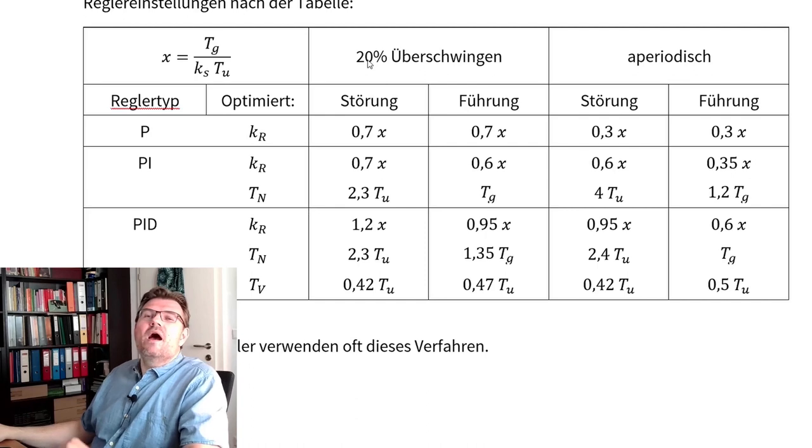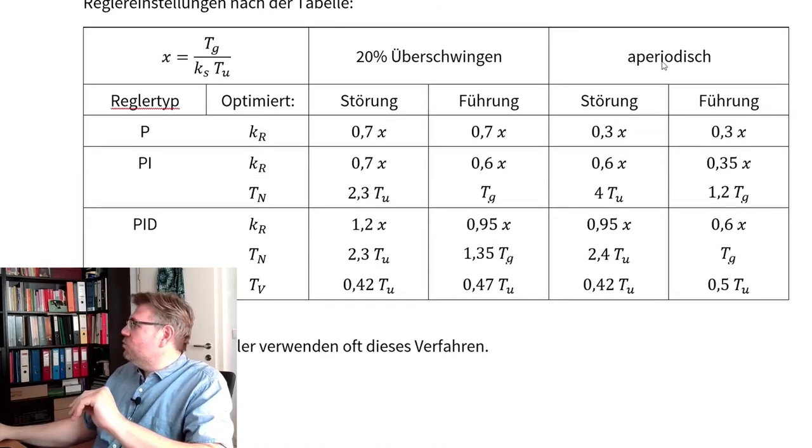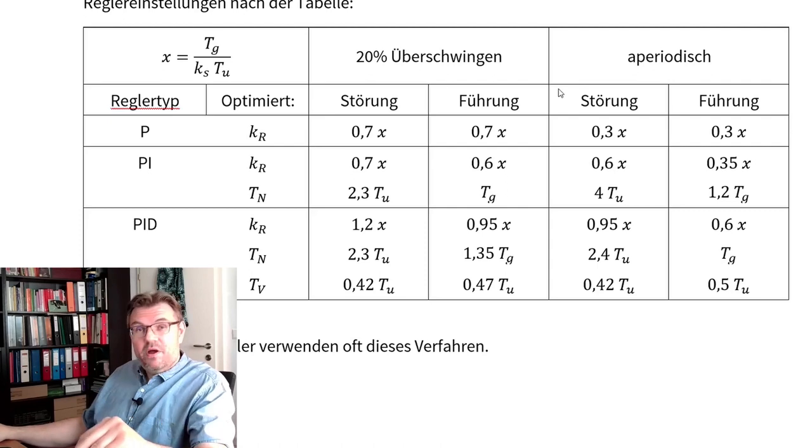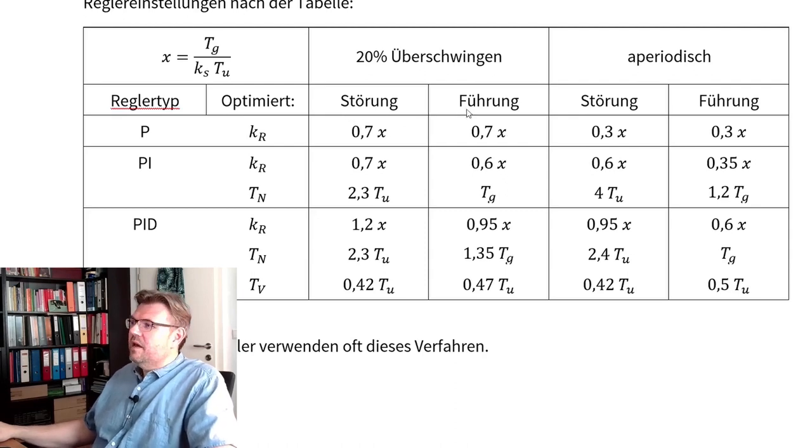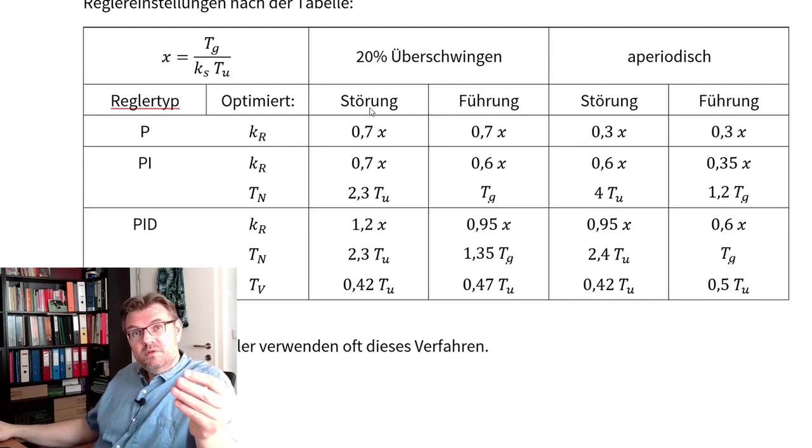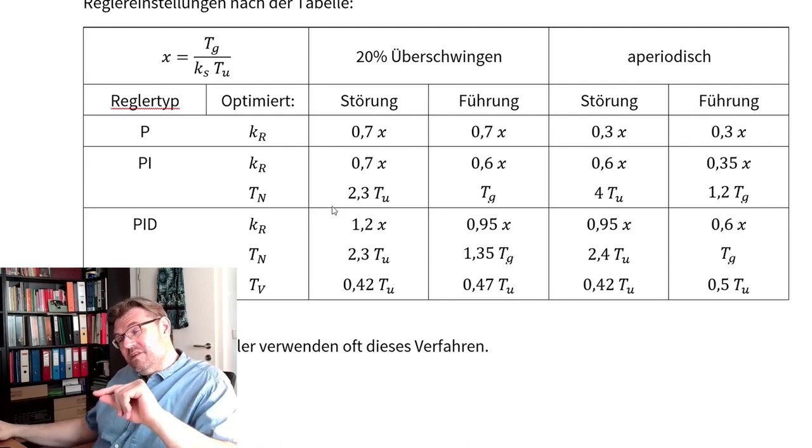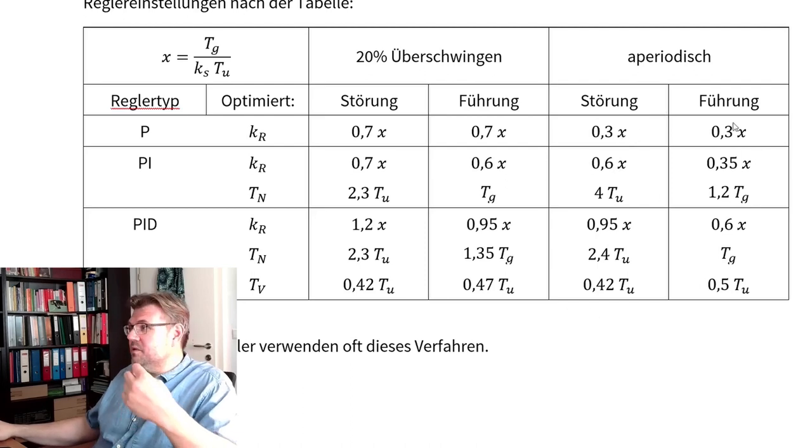And they said we are also differing in different cases. So we make one case where we allow up to 20% overswing. And then there's one case where we say it shall be aperiodic, no overswing at all. Störung means disturbance, and Führung means reference. So these are the set of parameters which needs to be taken if you allow 20% overswing and have a focus on disturbance transfer function. If reference transfer function is your main focus, use these parameters.